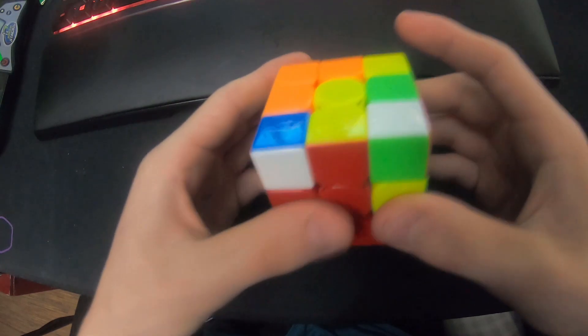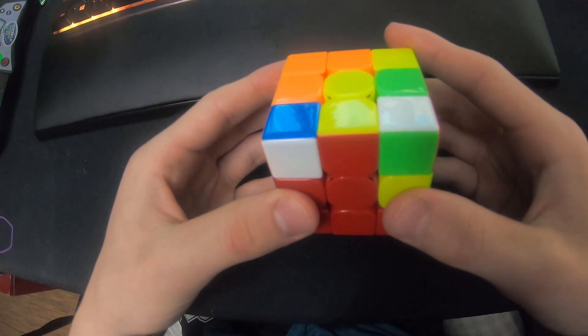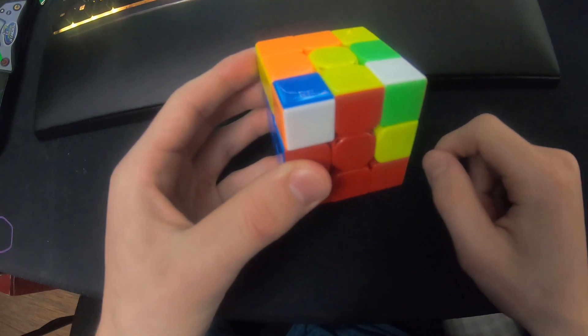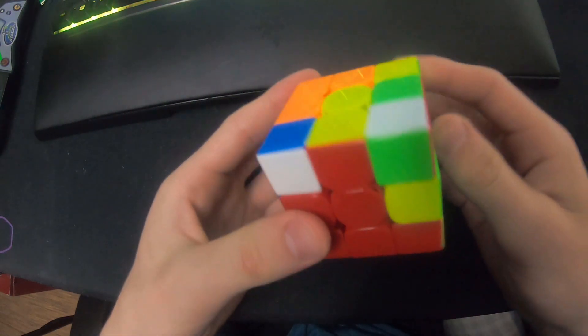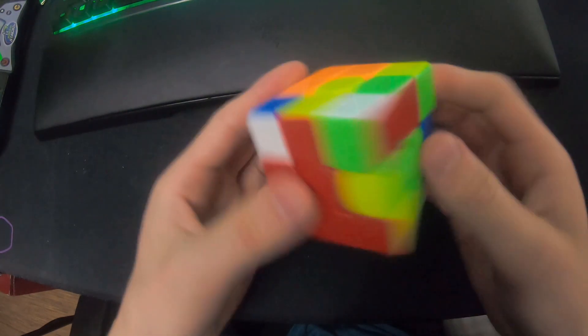I'm going to use my left thumb here to push and do a D prime. I think this is very important for flow. If you don't do it, you'd be like U prime Y, and it's still fast, but I think just for flow it's very good.